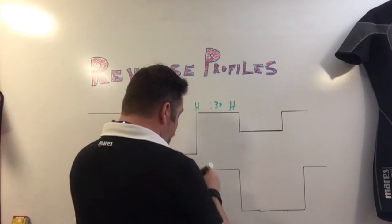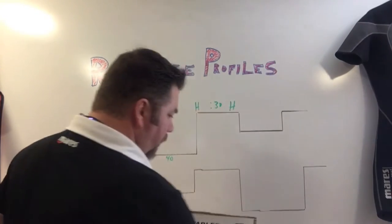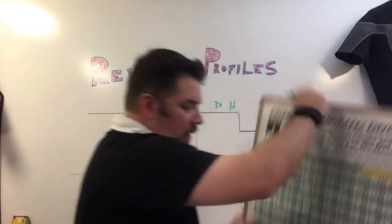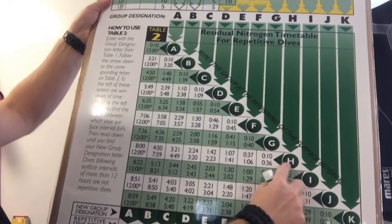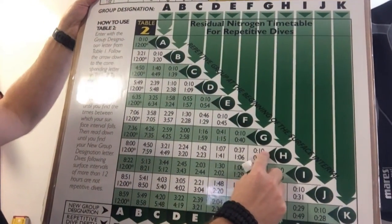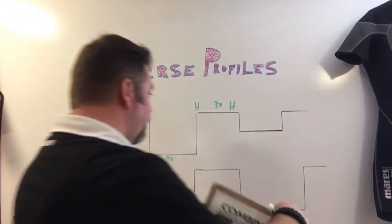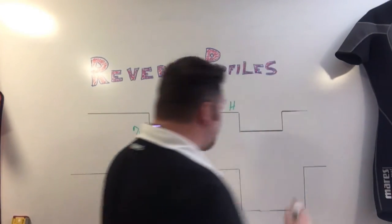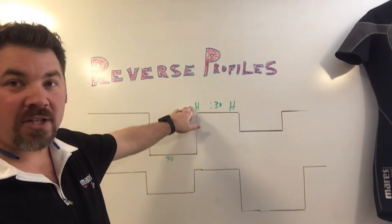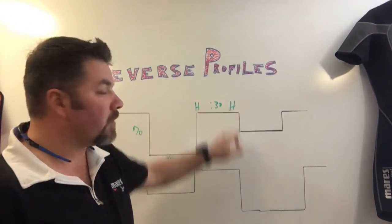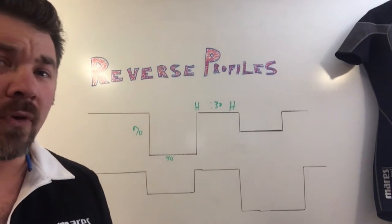So we're going to do a 30-minute surface interval. I'm going to bring up the tables here — as an H diver, following the arrows down, 30 minutes falls in this category, and it still has me as an H diver. So my typical first dive and surface interval: 70 feet for 40 minutes, pressure group H, and after a 30-minute surface interval I'm still going to be an H diver.